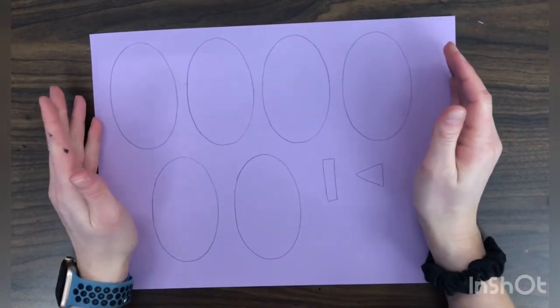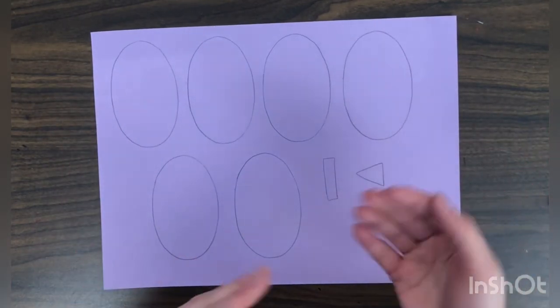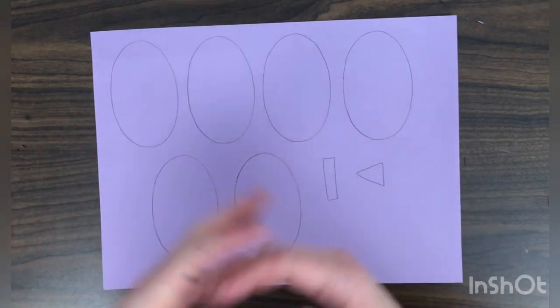So once you have all of your shapes laid out, we're going to give our balloon dog the highlights and shadows. Remember, when the light reflects off of something, it makes it look lighter.